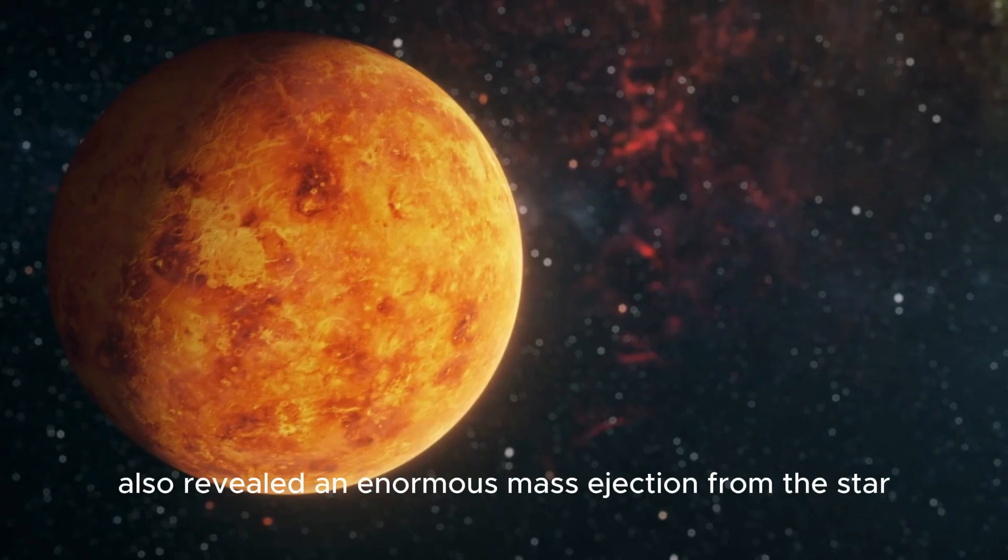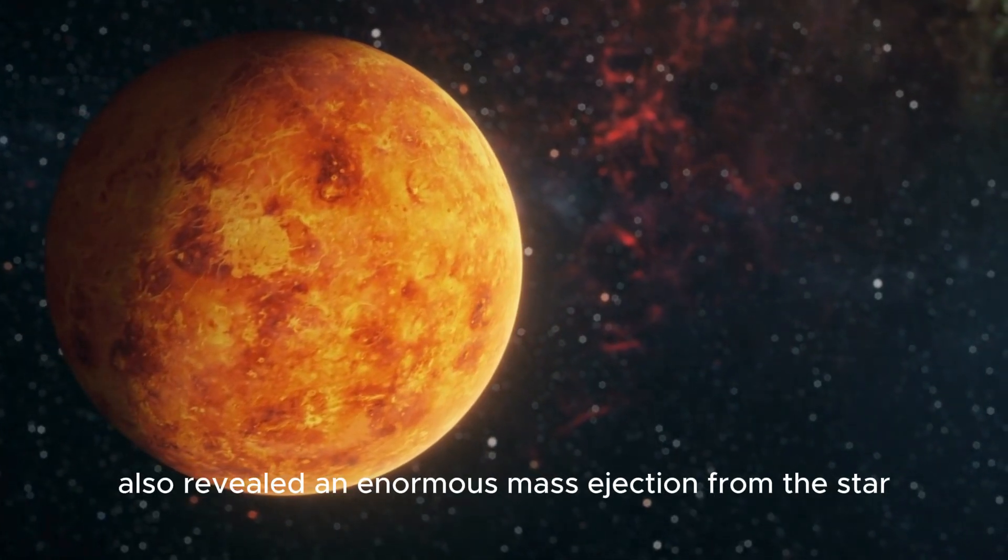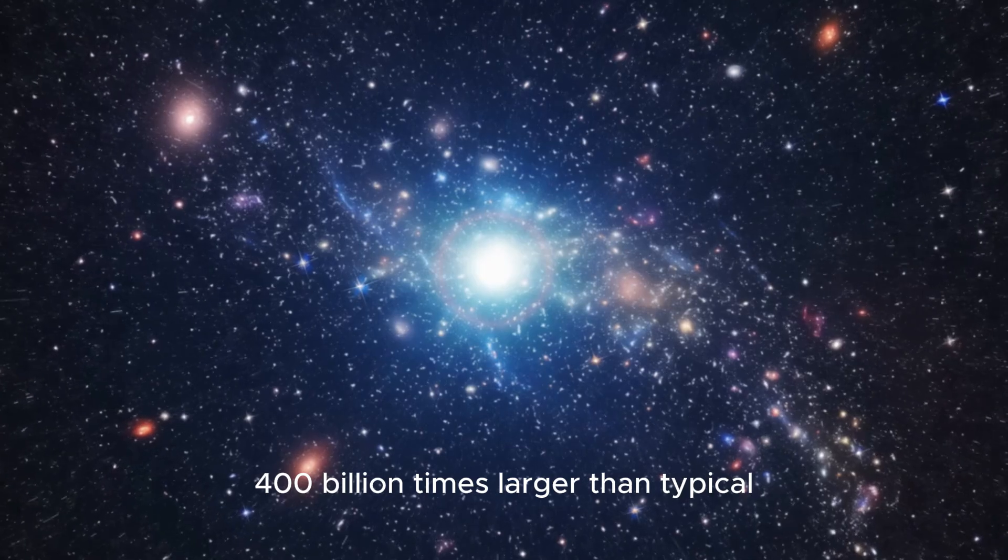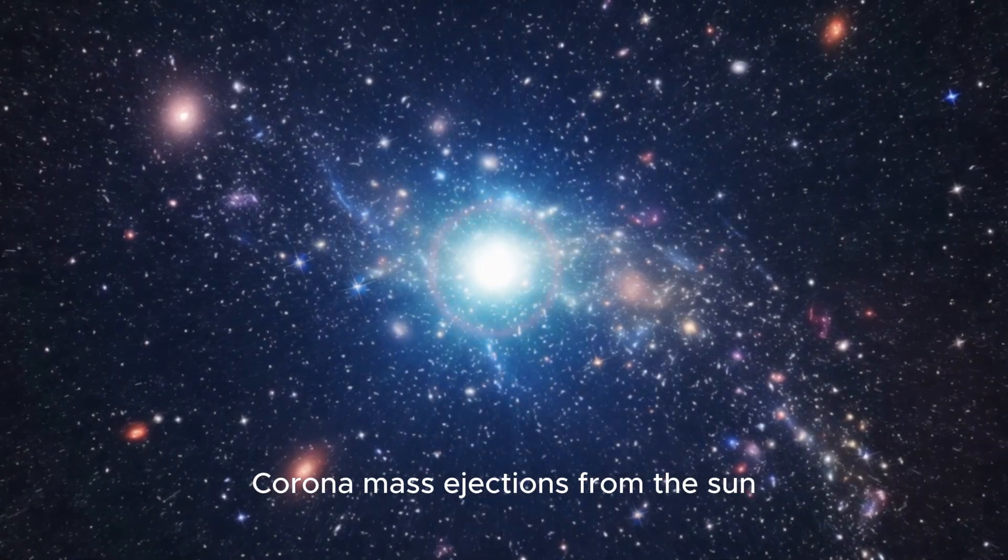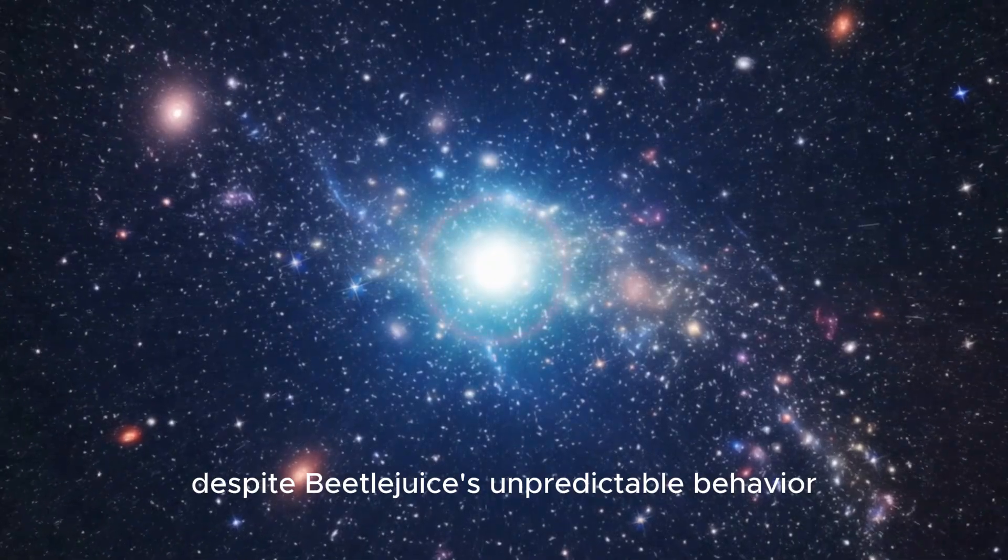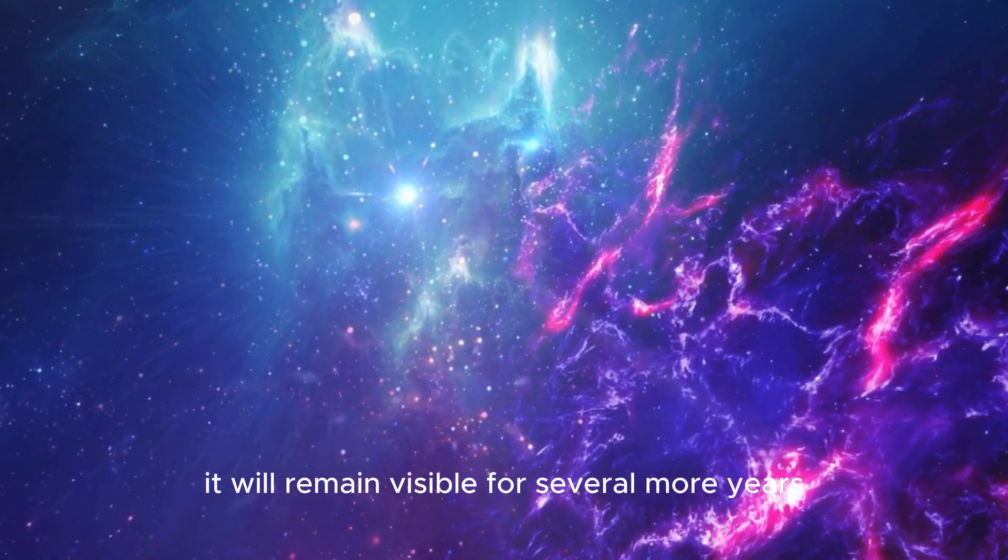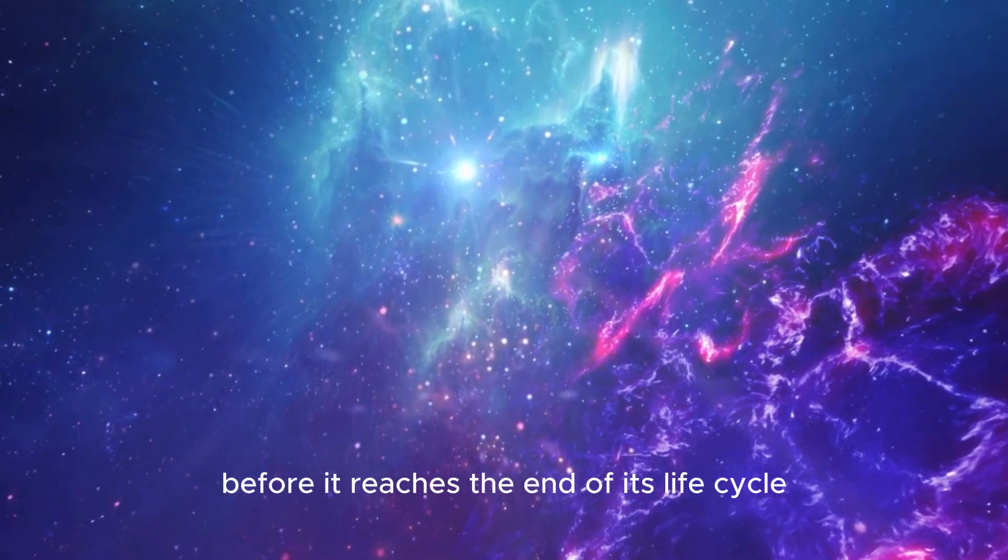Recently, the telescope also revealed an enormous mass ejection from the star, 400 billion times larger than typical coronal mass ejections from the sun. Despite Betelgeuse's unpredictable behavior, astronomers predict it will remain visible for several more years before it reaches the end of its life cycle.